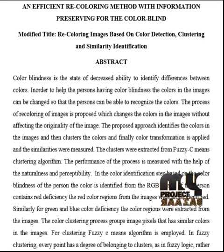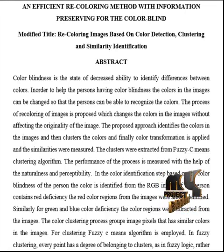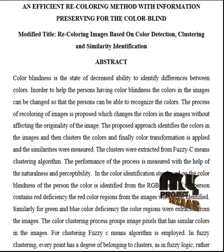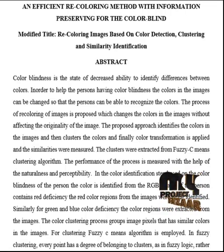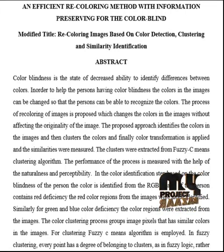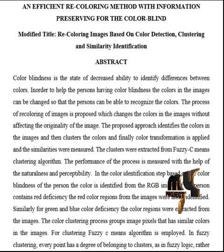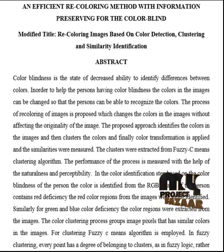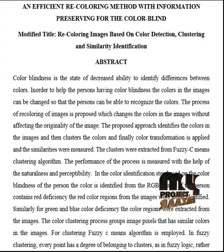The performance of the process is measured with the help of naturalness and perceptibility. In the color identification step, based on the colorblindness of the person, the color is identified from the RGB image. If the person has red deficiency, the red color regions from the images are identified. Similarly, for green and blue deficiency, the color regions are extracted from the images.